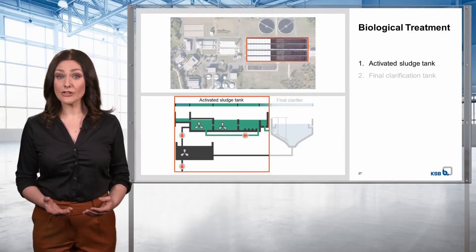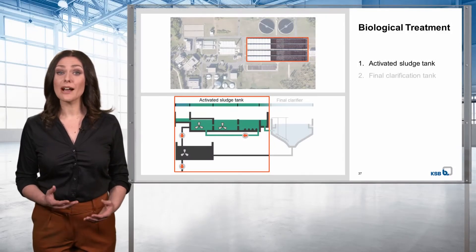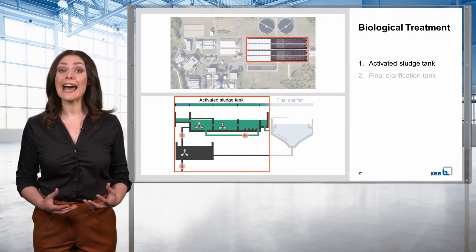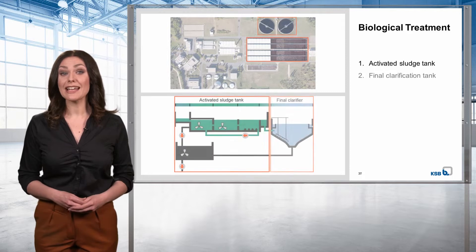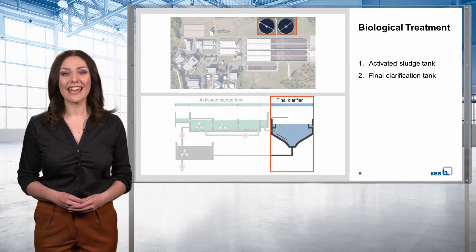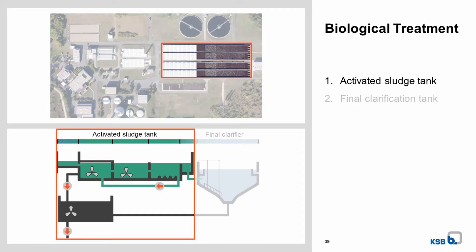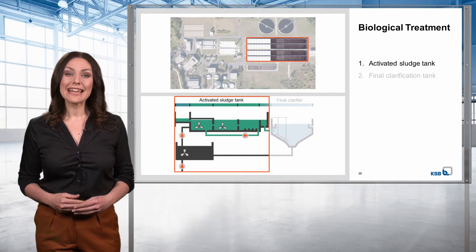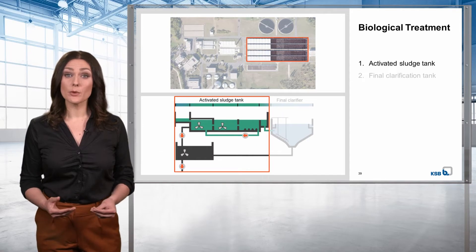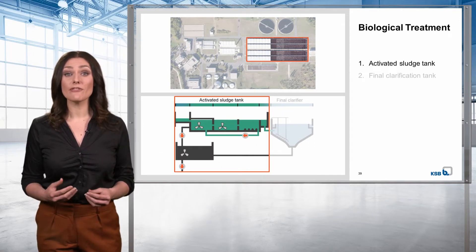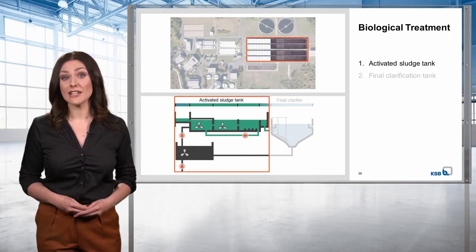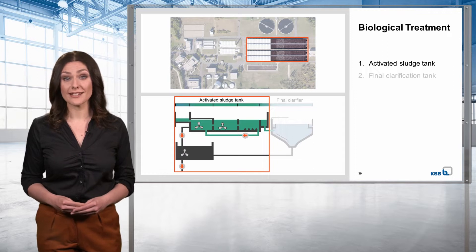The biological treatment stage comprises a so-called activated sludge tank and a final clarification tank. The activated sludge tank is the place of nitrification and denitrification processes. In larger wastewater treatment plants, the additional step of phosphate elimination is carried out before these processes.